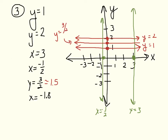X equals negative 1.8: go to the x-axis, negative 1.8 would be about right here, and it's going to be a vertical line. Linear equations with one variable are the easiest ones to graph — they're either going to be vertical, up or down, or horizontal, left to right.